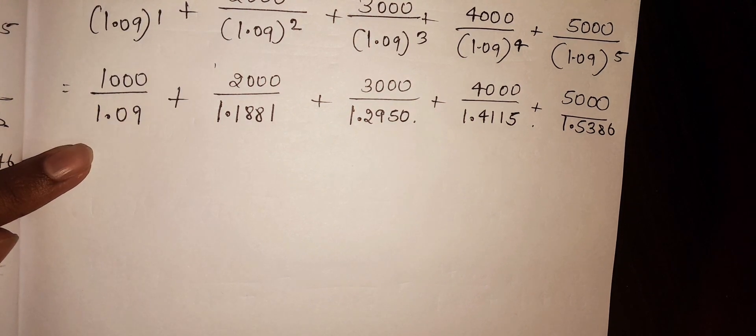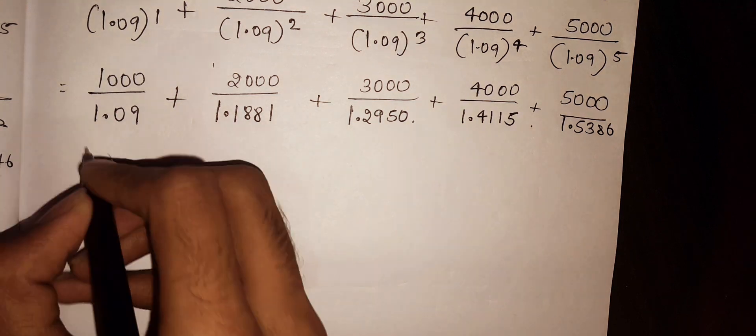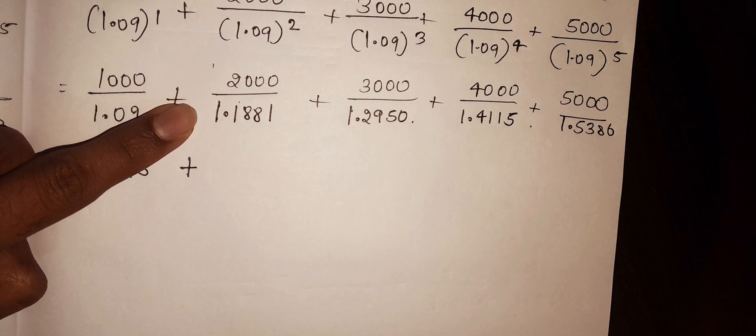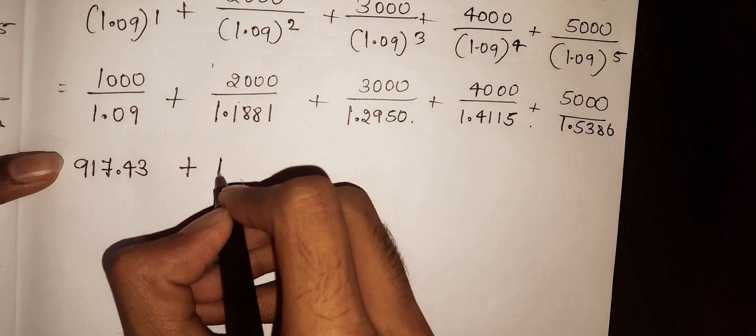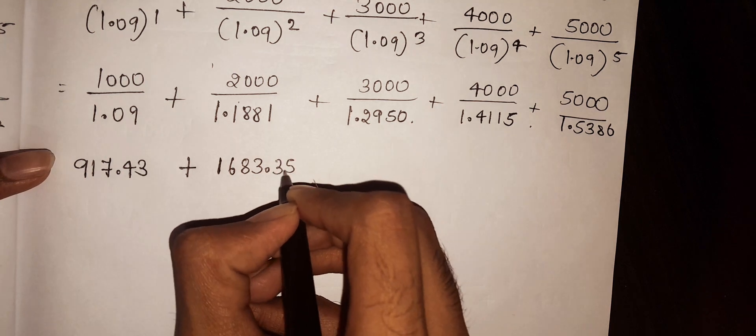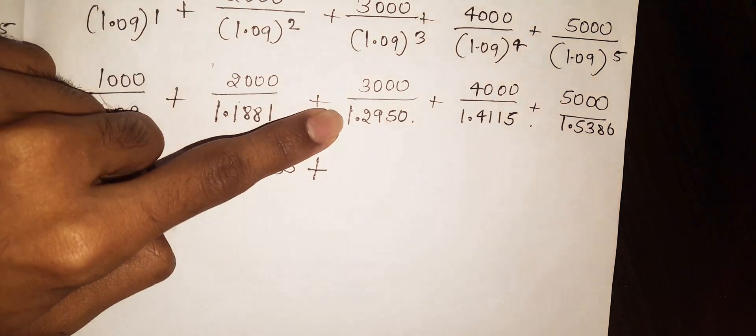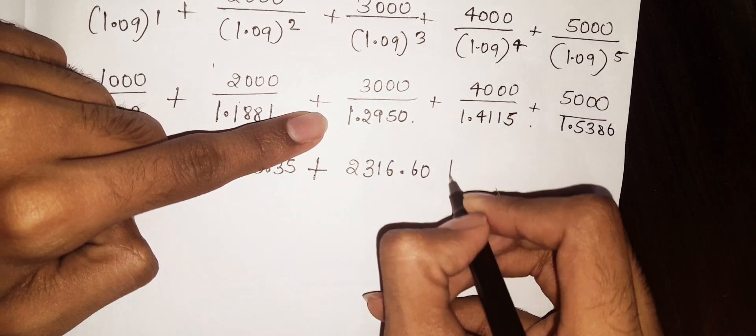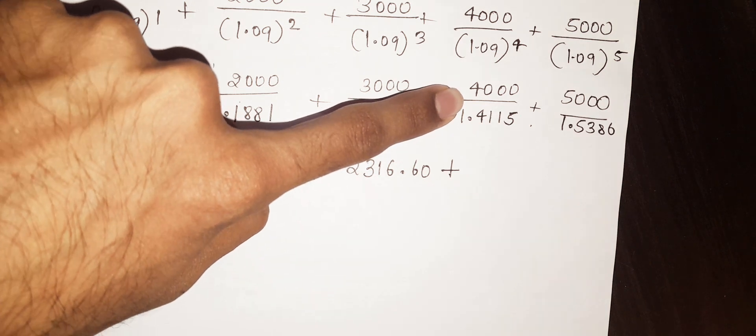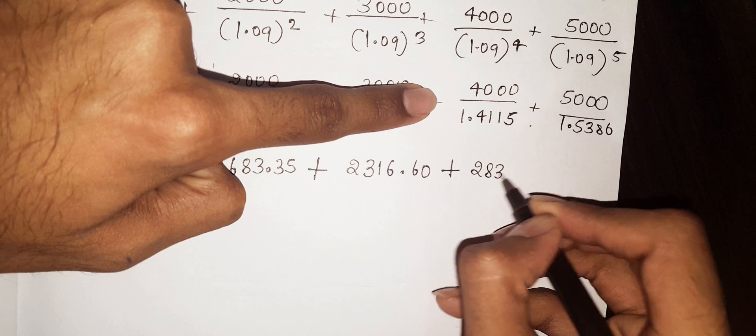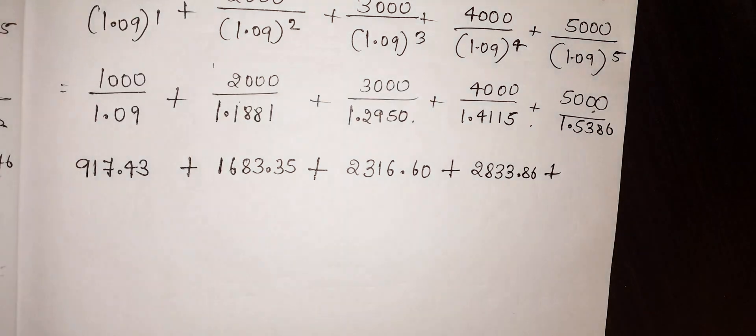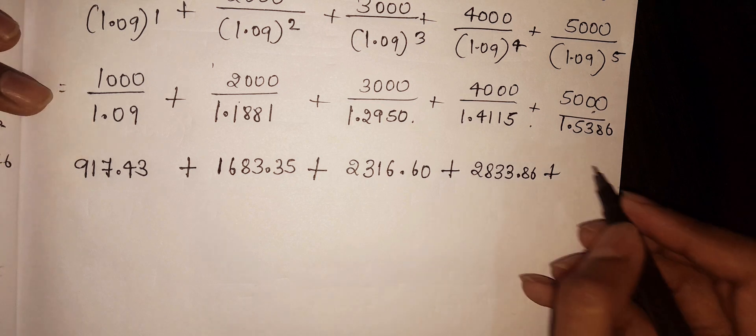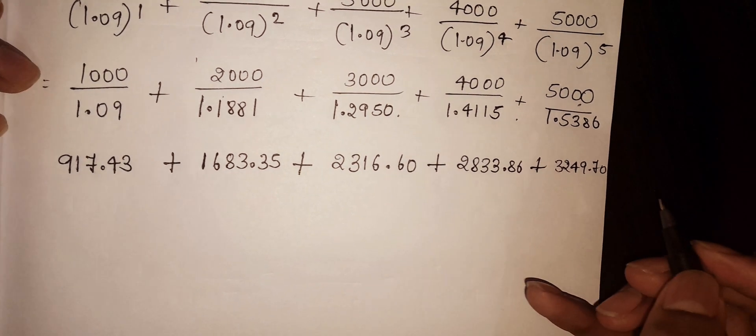So 1000 divided by 1.09 equals 917.43, plus 2000 divided by 1.1881 equals 1683.35, plus 3000 divided by 1.2950 equals 2316.60, plus 4000 divided by 1.4115 equals 2833.86, plus 5000 divided by 1.5386 equals 3249.70.